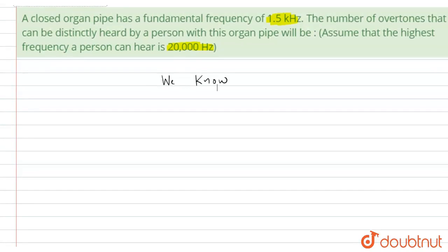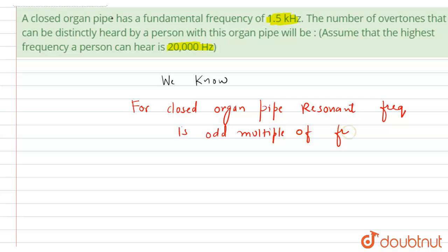Now here we can write, for a closed organ pipe, resonant frequency is odd multiple of fundamental frequency. That is, 2n plus 1 times the fundamental frequency should be less than or equal to 20,000.